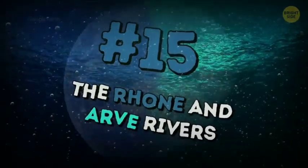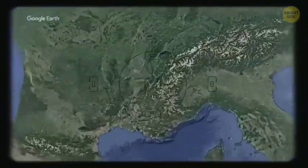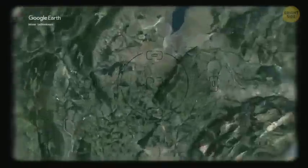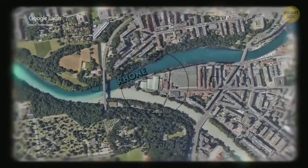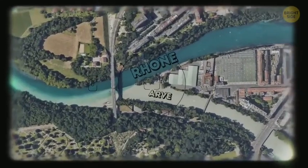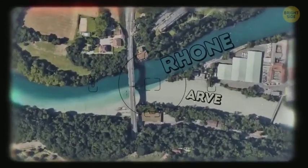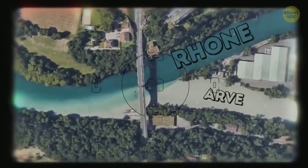The Rhône and Arve rivers. They flow into each other in Geneva, Switzerland. The Rhône is a pure river that flows out of the lake of Geneva. The Arve is cloudy as it gets its water from the glaciers of the Chamonix Valley.